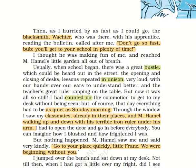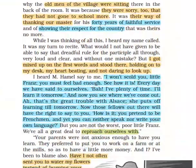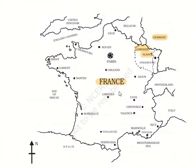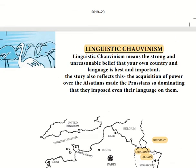Before we get into the lesson, let us look at the map provided. This is the map of France, and here are the two small French districts of Alsace and Lorraine, with the neighboring country Germany. The Prussians were a part of Germany and they annexed the territory of Alsace and Lorraine, gaining such power that in this chapter they even impose their language on the people. This concept is called linguistic chauvinism — it means the strong and unreasonable belief that your own country and language is best and most important.